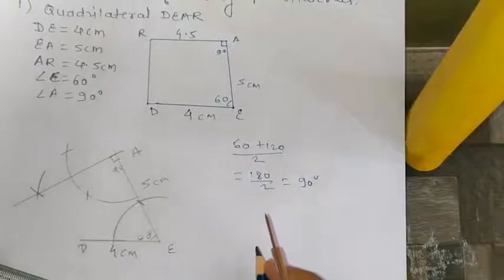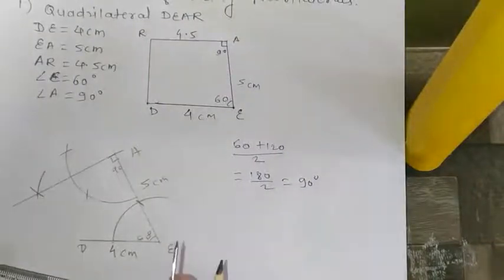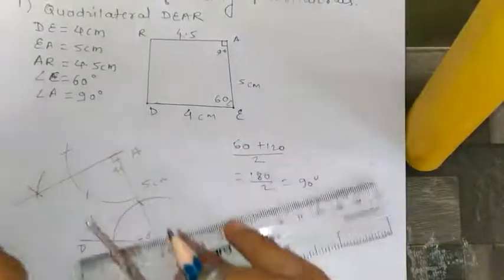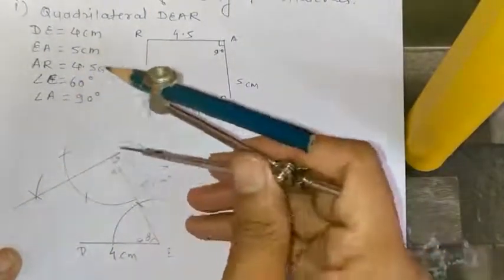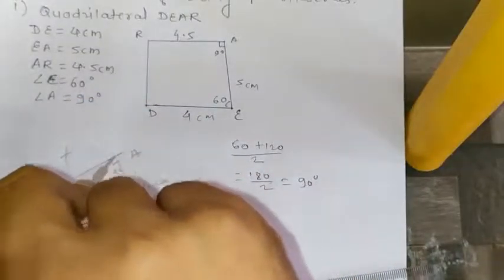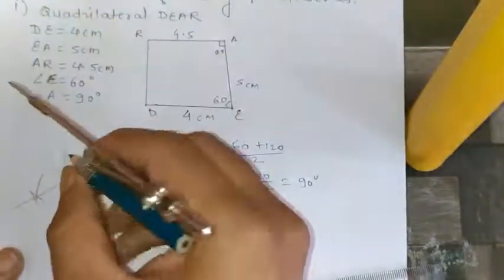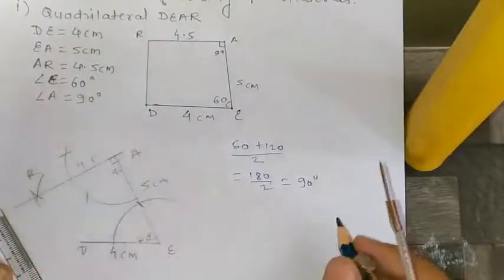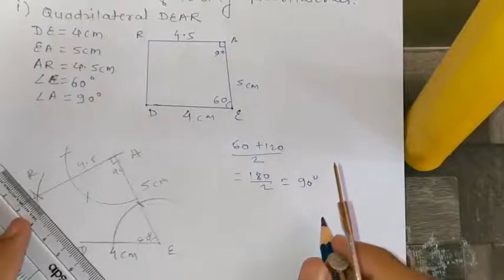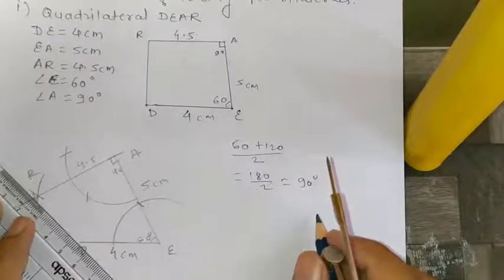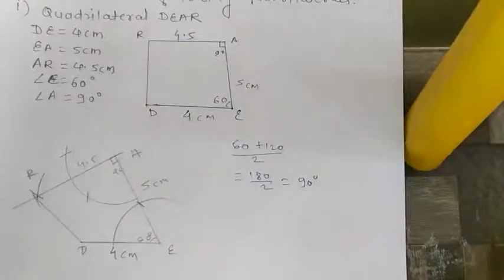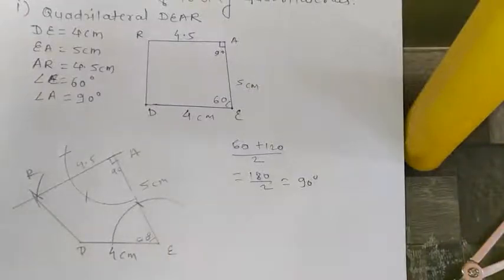According to the textbook, the distance RA is 4.5 cm. Take pointer at A with radius 4.5 cm and cut the arc to get point R. Then join point D and point R carefully. Finally, we have got quadrilateral DEAR. Whenever you do practical geometry, do it very carefully. After this we will go to the next part.